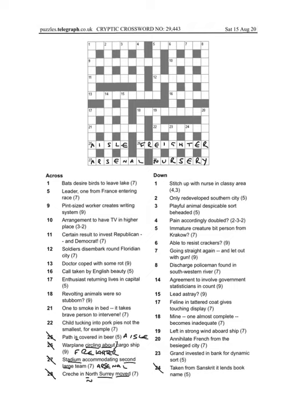Okay, let's have a look at one of the down ones now, we've got some across. So taken from Sanskrit, it lends book name, that's just in the words, Sanskrit, it lends, and the answer is title. And then 20, annihilate, so French from the besieged city, so besieged city was Troy, and then when you get French from, it could mean de, or des in French, and in this case it is des, which gives us destroy for annihilate.